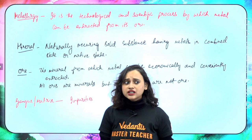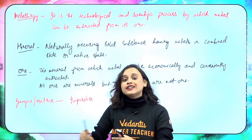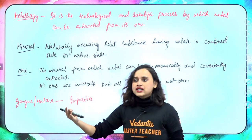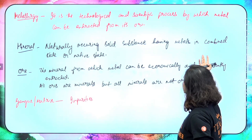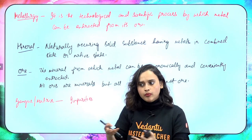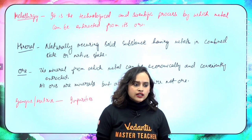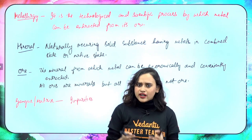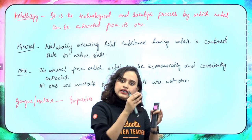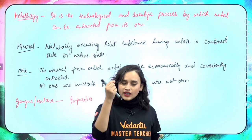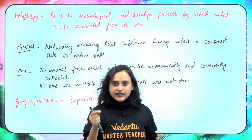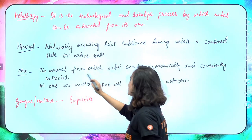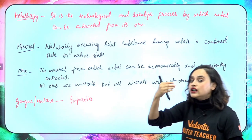First, what is a mineral? In metallurgy this word keeps repeating, so let's understand it. A mineral is a naturally occurring solid substance in which metals are present in combined state or native state. Native state means the noble metals like gold and silver — they are very less reactive, so you will find them existing as they are. Now what is an ore? Ore is the mineral from which metal can be economically and conveniently extracted.